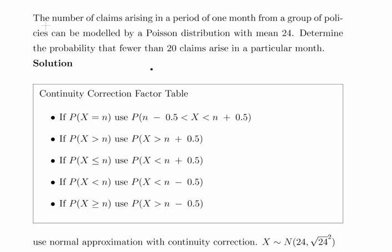The number of claims arising in a period of one month from a group of policies can be modeled as a Poisson distribution with a mean of 24. Determine the probability that fewer than 20 claims arise in a particular month.